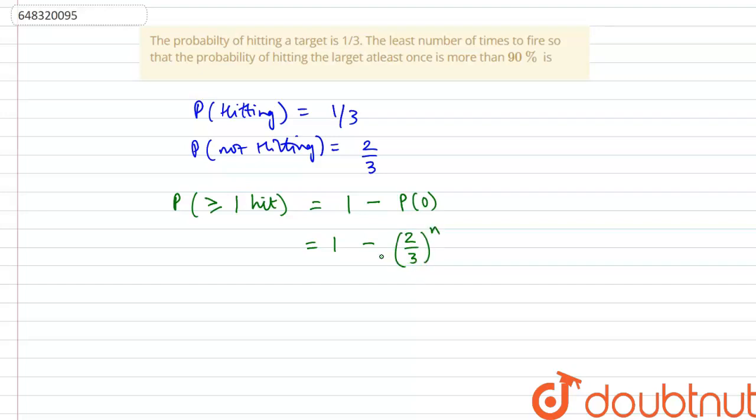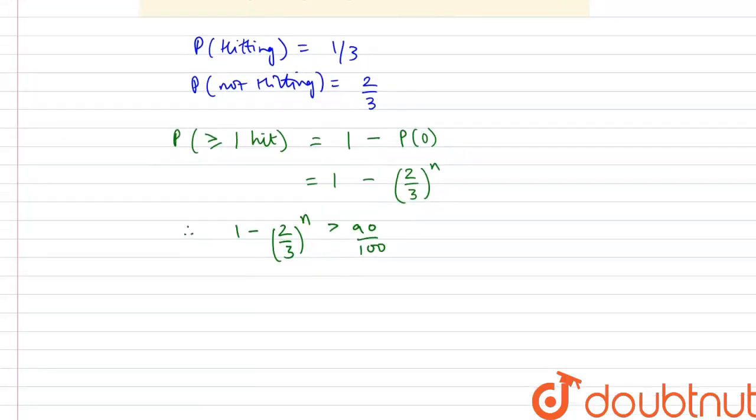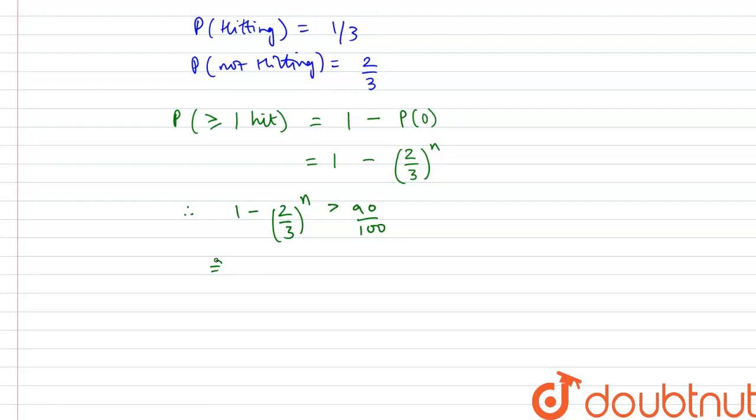So this is equal to or more than equal to 90%. Therefore, 1 minus 2 by 3 to the power n should be greater than 90 upon 100, more than 90%. This implies that 2 by 3 to the power n should be less than 10 by 100, which implies that 2 by 3 to the power n should be less than 1 by 10.